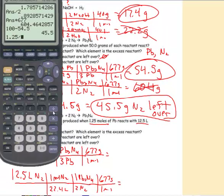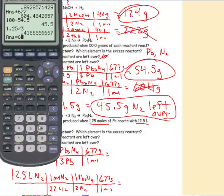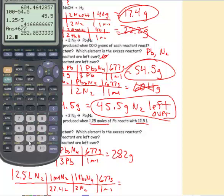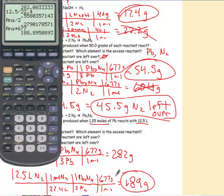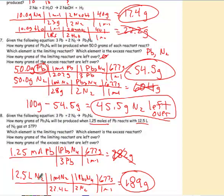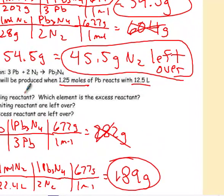1.25 divided by 3 times 677 gives me 282 grams of the product produced according to that. 12.5 divided by 22.4 divided by 2 times the molar mass, and I get 189 grams. So, that's the right answer. I am going to produce 189 grams of the product. I cannot possibly make 282 because all of the nitrogen runs out. So, nitrogen ends up being the limiting reactant again. So, which element is limiting? Nitrogen. That makes lead the excess. Opposite of last time.